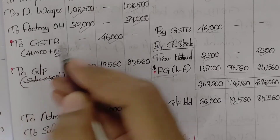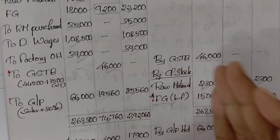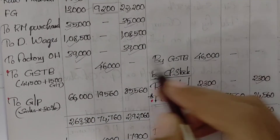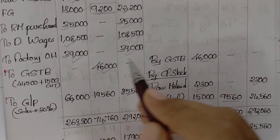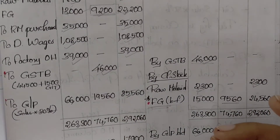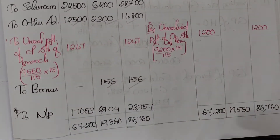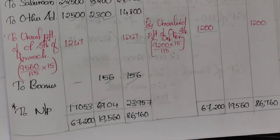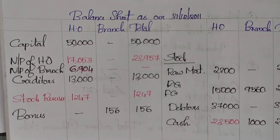Goods sent to branch will not be included in the total column because it is an inter-unit transaction — 46000 from head office to branch cancels out. So the inter-unit transaction total is eliminated. The balancing figure in the P&L account is the net profit.